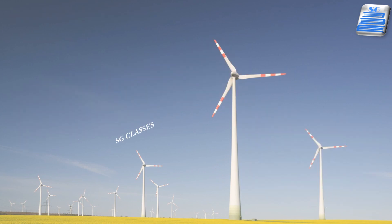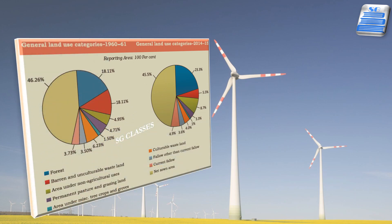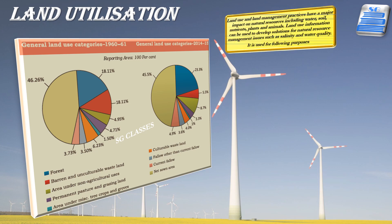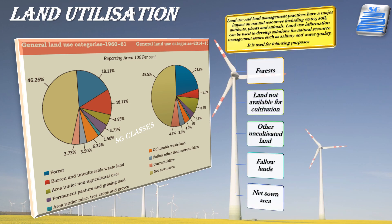Land resources are used for the following purposes: forest, land not available for cultivation such as barren and wasteland, land put to non-agriculture uses, fallow land, other uncultivated lands excluding fallow lands, and net sown area. All these keywords can be used in your answers.